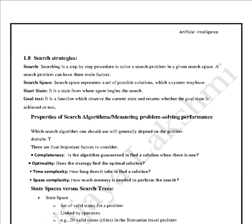Searching is a step-by-step procedure to solve a search problem in a given search space. A search problem has three main factors: search space, which represents a set of possible solutions the system may have; start state, which is the state from where the agent begins the search; and goal test, which is a function that observes the current state and returns whether the goal state is achieved or not.